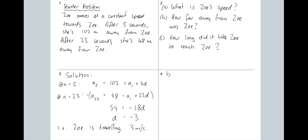Part B: how far away from Zoe was Zoe? If I rewrite this as an arithmetic sequence question, what am I really asking? What is the value of A sub 1? Because we've worked out D, we're good to go. I'll use A sub 5 since the numbers look prettier: 102 equals A sub 1 plus 4 times negative 3, which means A sub 1 equals 114 metres.